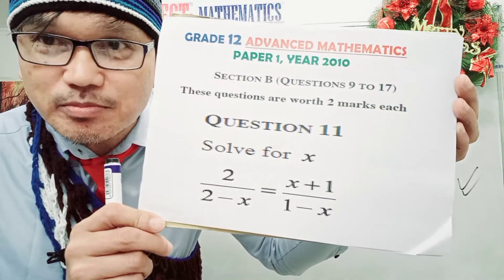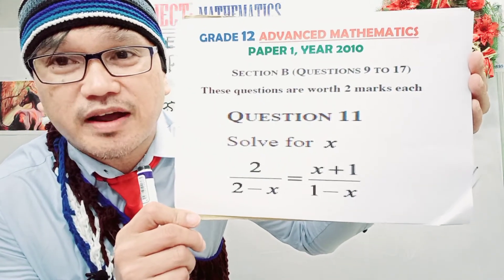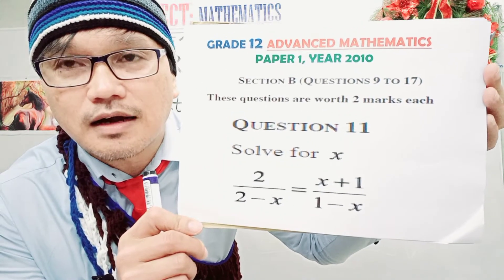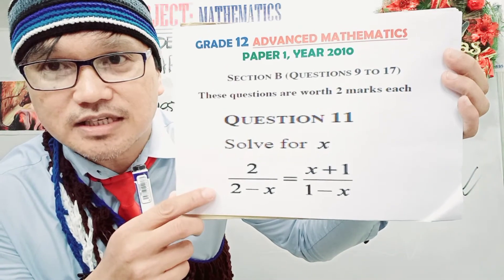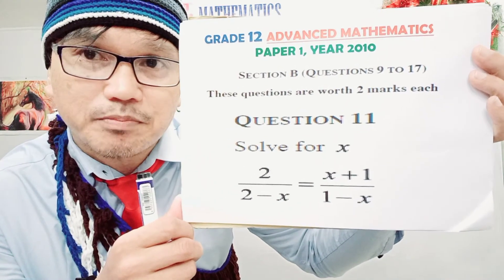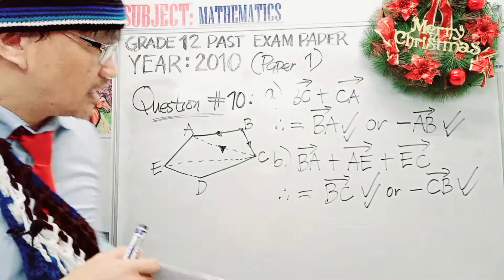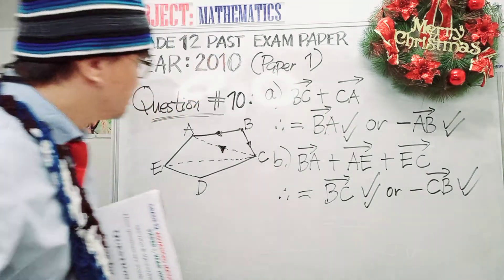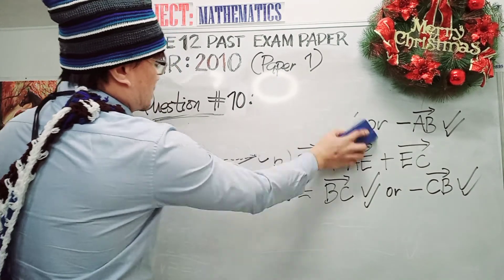This is our question number 11. Question number 11, worth two marks, is more on algebra — algebraic fractions. When it comes to algebraic fractions, you could either find the LCD, or once it is already represented like this, all you need to do is cross multiply, perform the operation, and then collect like terms.